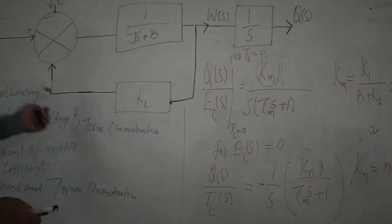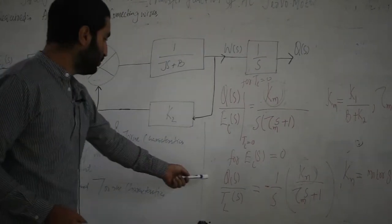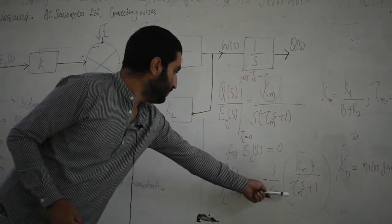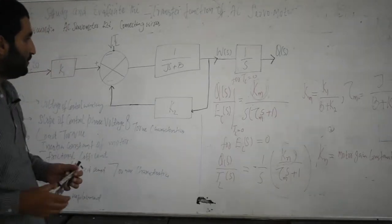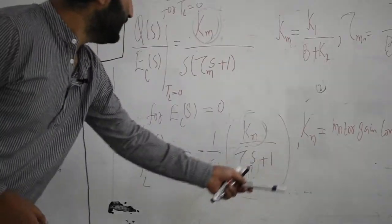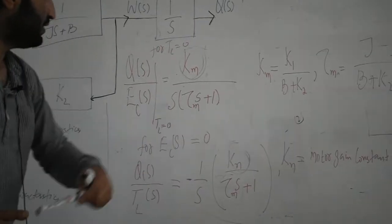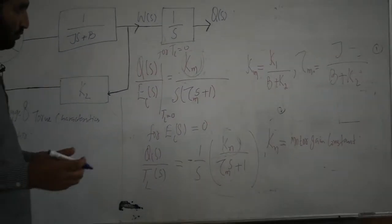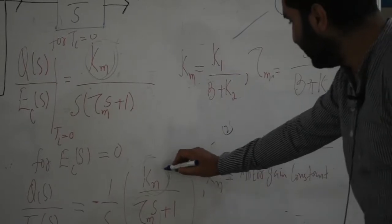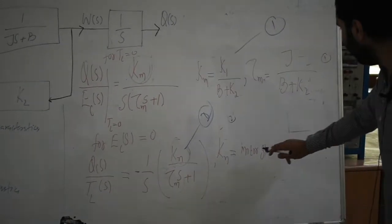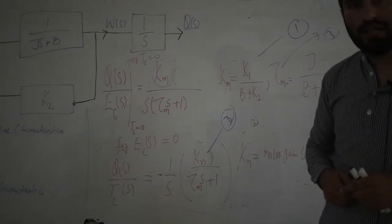Now setting EC(s) equal to zero and applying TL, the transfer function theta(s) divided by TL(s) is minus 1/s times Km divided by (Tm · s + 1), where Km is the motor gain constant. We have three parameters to determine: Km (motor constant), Kn (motor gain constant), and tau (time constant).